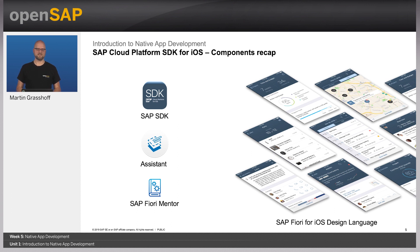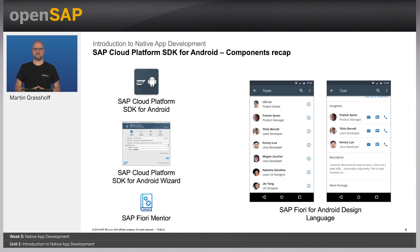We offer two different SDKs for native app development. One is the SAP Cloud Platform SDK for iOS, which consists of four components: the SDK itself, the so-called assistant, and the Fiori mentor. These three software components implement the SAP Fiori for iOS design language, which provides a set of reusable UI controls for native applications. On the Android side, we offer the SAP Cloud Platform SDK for Android, which also consists of four parts: the SDK itself, the Cloud Platform SDK wizard, and a version of the Fiori mentor — all ensuring the SAP Fiori for Android design language is correctly implemented.